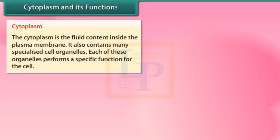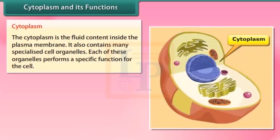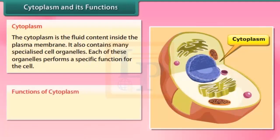Cytoplasm and its functions: the cytoplasm is the fluid content inside the plasma membrane. It also contains many specialized cell organelles, each of which performs a specific function for the cell. All cell organelles are embedded in the cytoplasm.